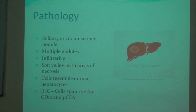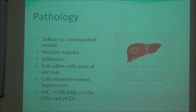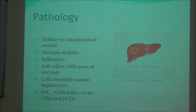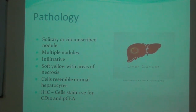Hepatocellular carcinoma can present as multiple nodules in liver tissue, or sometimes as an infiltrative tumor involving the liver tissue in a generalized fashion where no single nodule or space-occupying lesion is visible. On gross pathology, the tumors are usually soft and yellow with areas of necrosis. On histopathology, the cells of hepatocellular carcinoma resemble normal hepatocytes, and the degree of resemblance depends upon differentiation — well differentiated, moderately differentiated, or poorly differentiated.